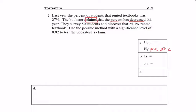I always choose to put it as a decimal number because I'm going to be putting it into a math formula in a few minutes. If p less than 0.27 is the claim, then H0, the null hypothesis, is p equals 0.27.